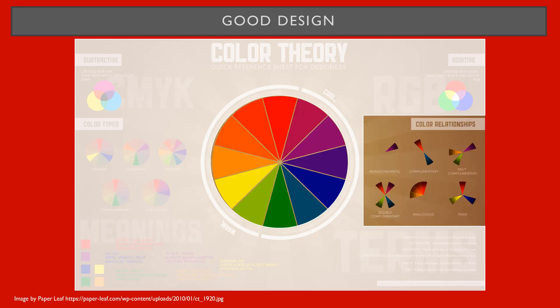Also think about color relationships. Examples include complementary or opposite colors on the wheel, analogous or similar colors on the wheel, or triadic, which is three colors that are equal distance to each other on the wheel.